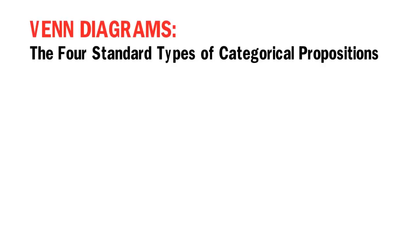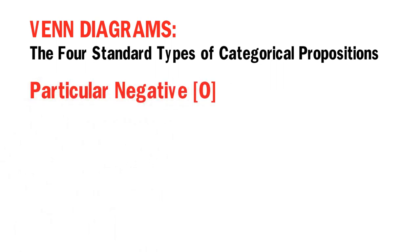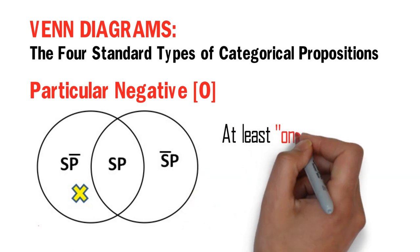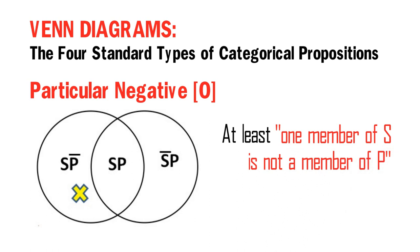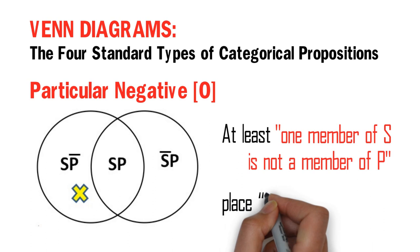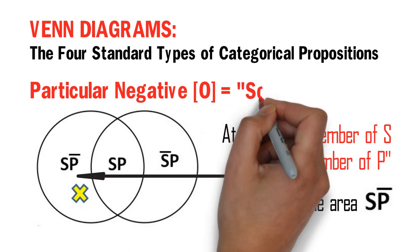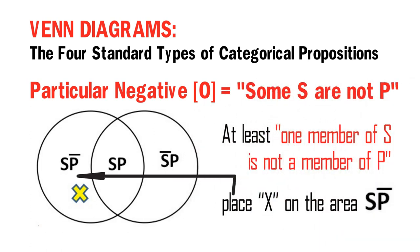Now, here is the Venn Diagram for Particular Negative O Propositions. A Particular Negative O Proposition asserts that there is at least one member of S that is not a member of P. Thus, in this diagram, we place the X on the area 'S but not P' to indicate that, indeed, there is at least one member of S that is not a member of P. Thus, we can say: some S are not P.